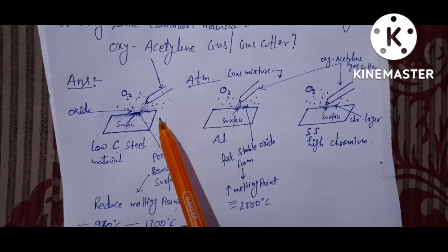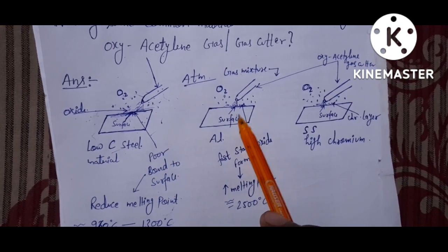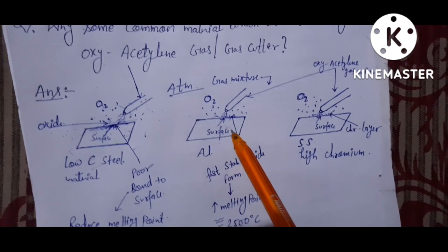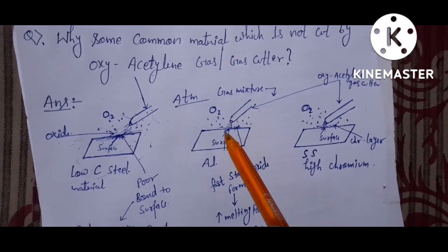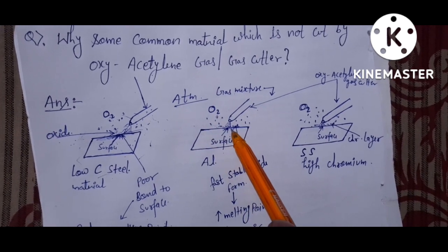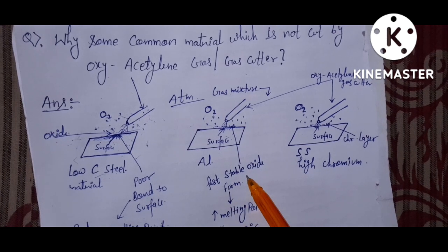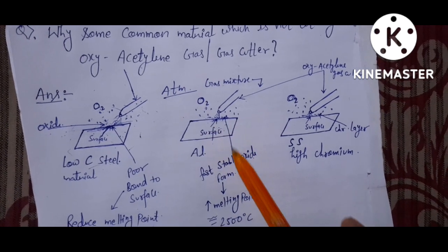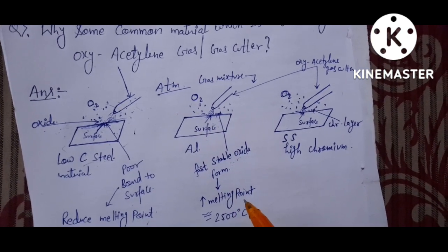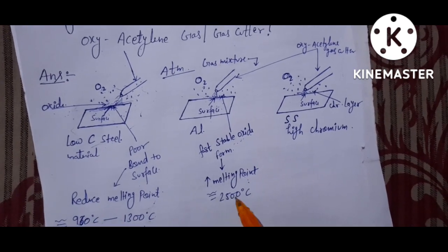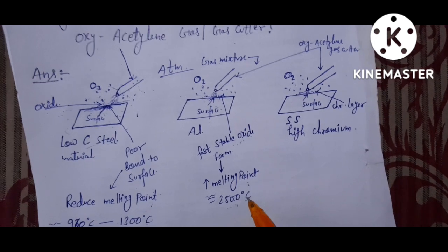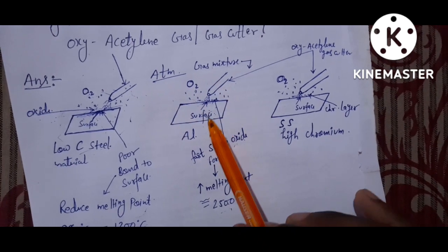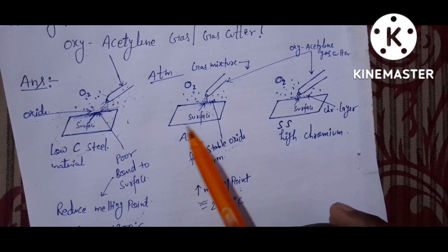But inspect this aluminium plate. If you want to cut the surface of this aluminium plate with an oxyacetylene gas cutter, it also creates an oxide — but this oxide is a very stable oxide that forms very fast. This surface oxide has a high melting point of about 2500 degrees Celsius, so it is not easily cut by oxyacetylene gas; more energy is required and the cut cannot be completed.